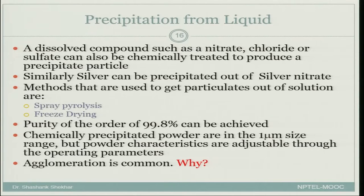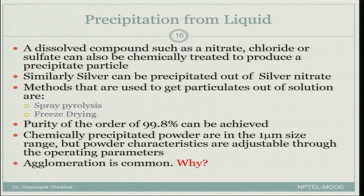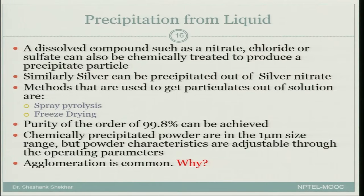We looked at some of the methods including the Bayer technique, and others involving compounds such as nitrate, chloride, or sulphate from which you can precipitate out powder. Now there are some more ways where you can get precipitates out from the liquid. Two of those methods are spray pyrolysis and freeze drying.